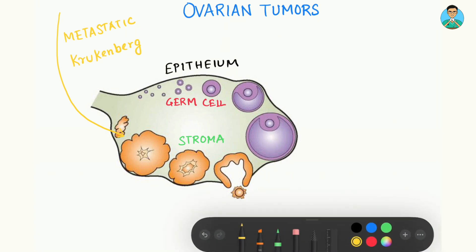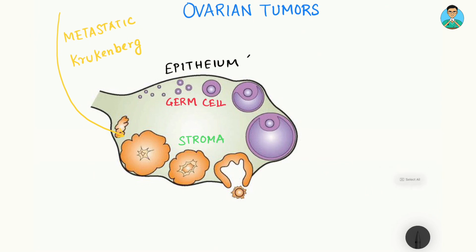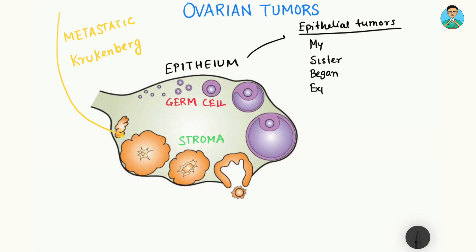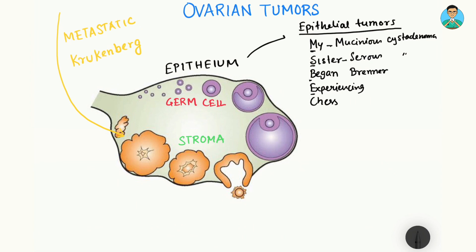From the epithelium, the tumors originating are named epithelial tumors. We have a mnemonic to remember them: 'My Sister Began Experiencing Chest.' M represents mucinous cystadenoma of the ovary. S represents serous cystadenoma of the ovary. B represents Brenner tumor. E represents endometroid tumor, or endometroid cancer of the ovary. And the final C represents clear cell cancer of the ovary.